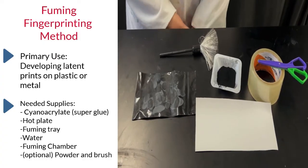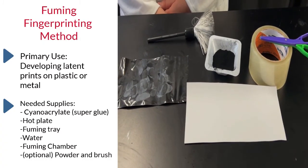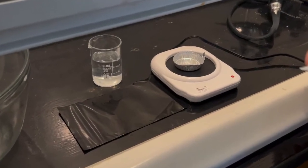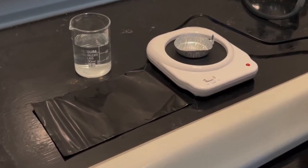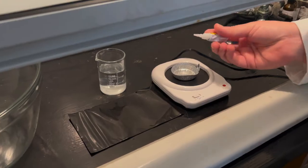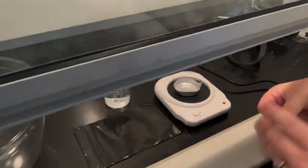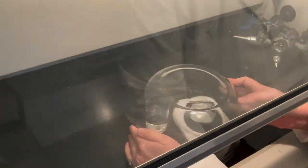Optionally, powder and a brush may be used after developing prints by fuming to lift and analyze prints. To fume fingerprints, in a well-ventilated area, place a heating element with a fuming dish atop a heat source, a cup of water for added humidity, and the object being fumed. Add cyanoacrylate or superglue to the fuming dish, turn on the heating element, and enclose the items in a fuming chamber.